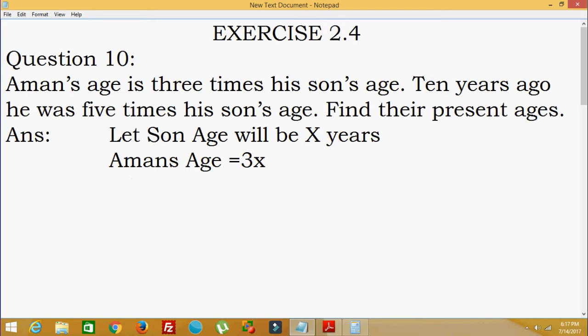So what he has given: Aman's age 10 years ago—he was means Aman was, means 3x minus 10, 10 years ago. He was equal to five times his son's age. Five times his son's age.